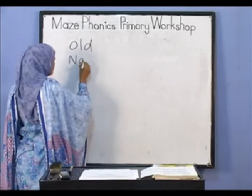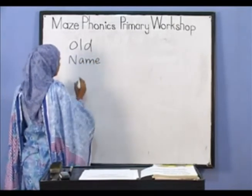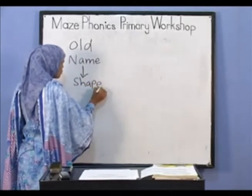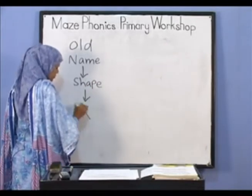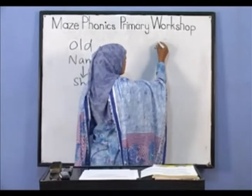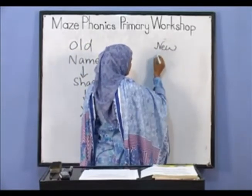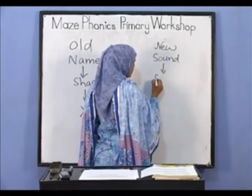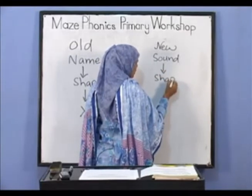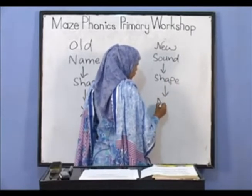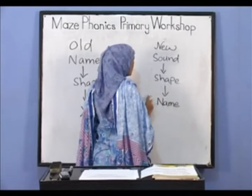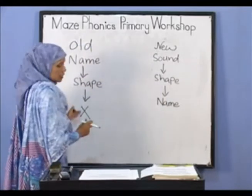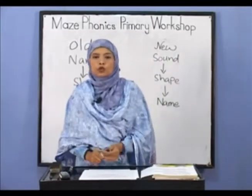In all old teaching methods, when we are teaching a letter, we use first of all the name of the letter, then we introduce the shape. There is no concept of sound. But in new teaching methods, we first introduce the sound, then the shape, and at last we introduce the name of the letter. This is the new sequence to introduce the letter.